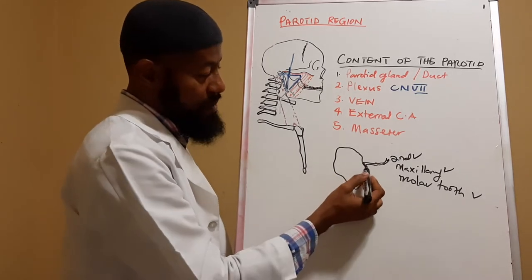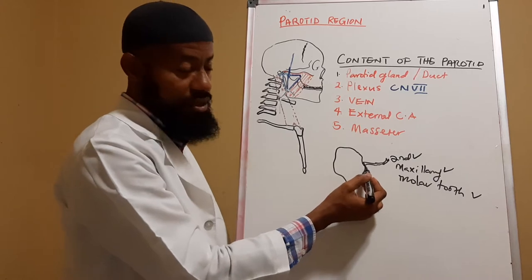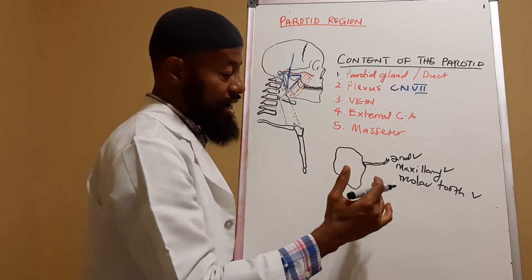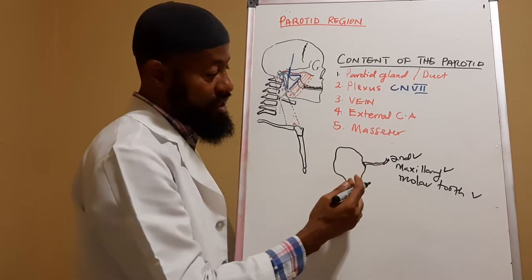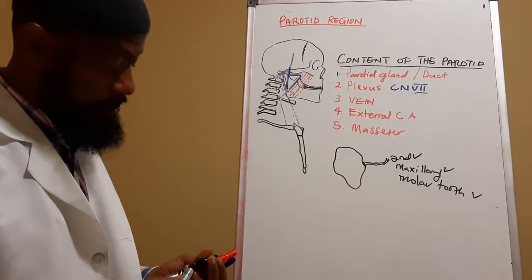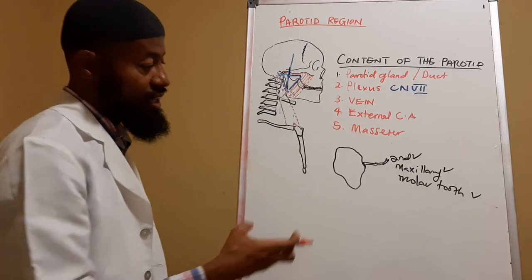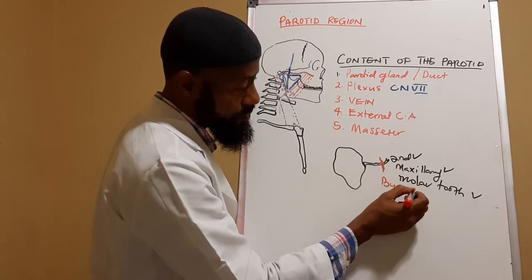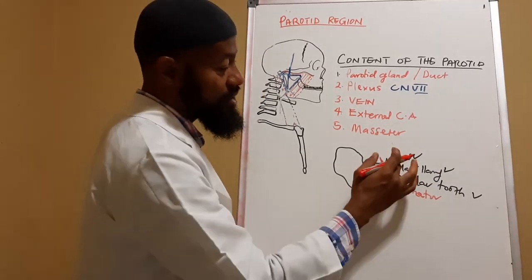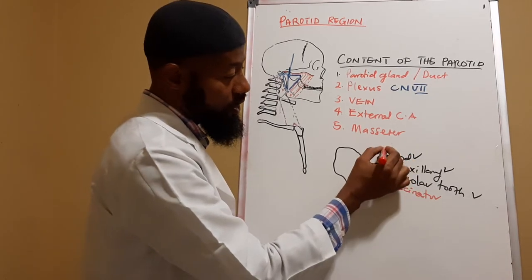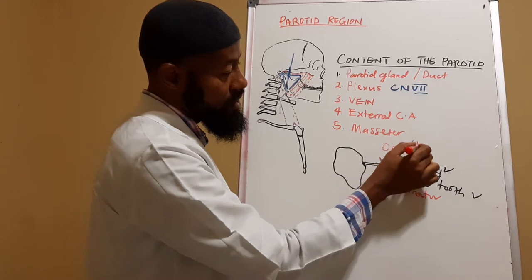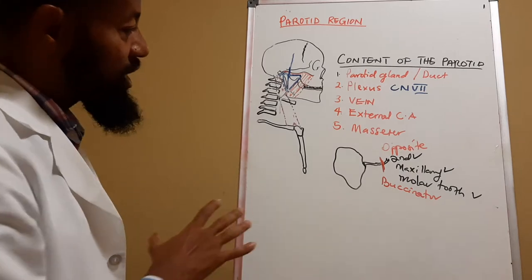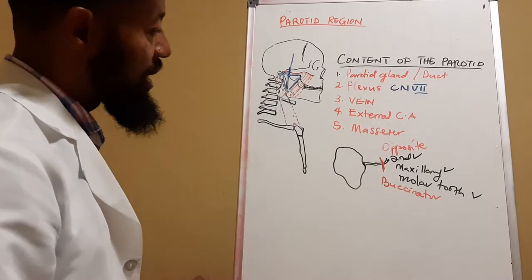The duct emerges from the anterior margin of the gland and runs medially, running at the anterior border of the masseter, where importantly it pierces the buccinator muscle and enters the oral cavity opposite the second maxillary molar tooth.